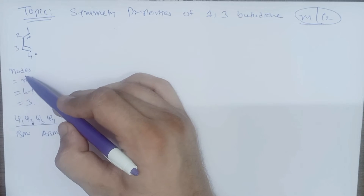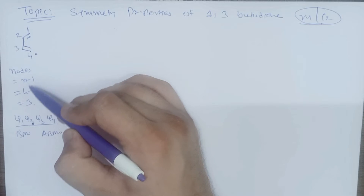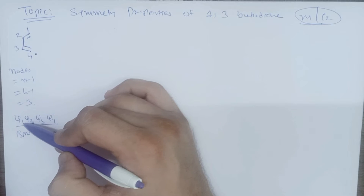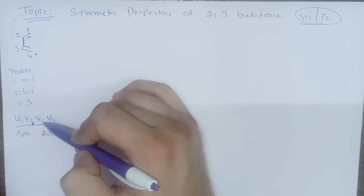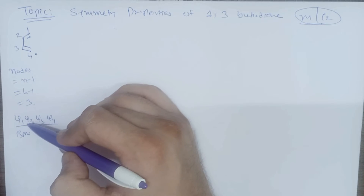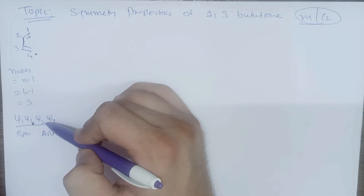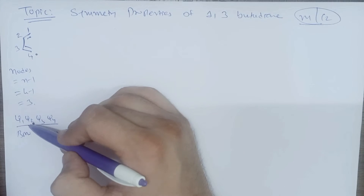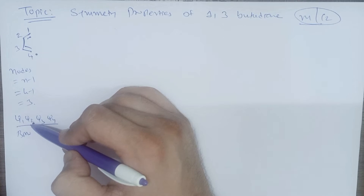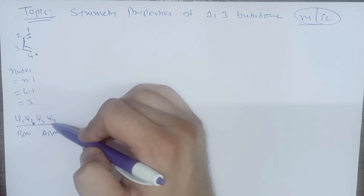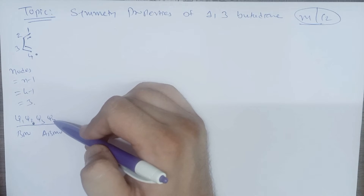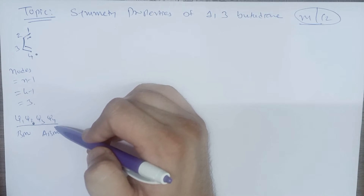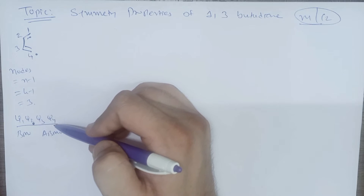Now here we are having 4 pi electrons, so there are four wave functions: psi 1, psi 2, psi 3, and psi 4. Psi 1 and psi 2 will remain in the BMO (bonding molecular orbital), and psi 3 and psi 4 will remain in the ABMO (anti-bonding molecular orbital).